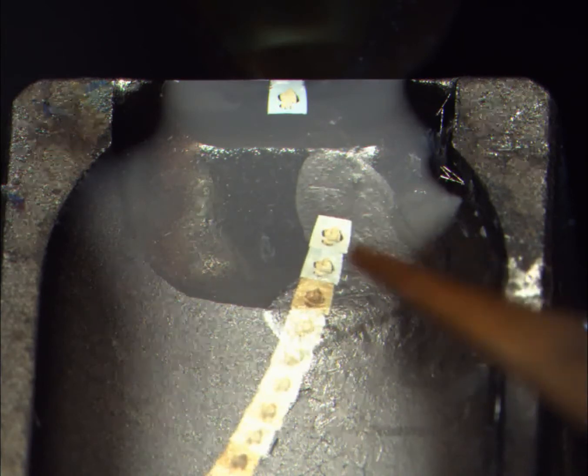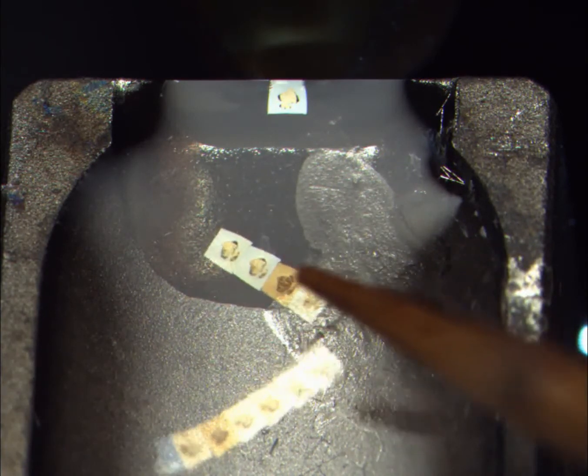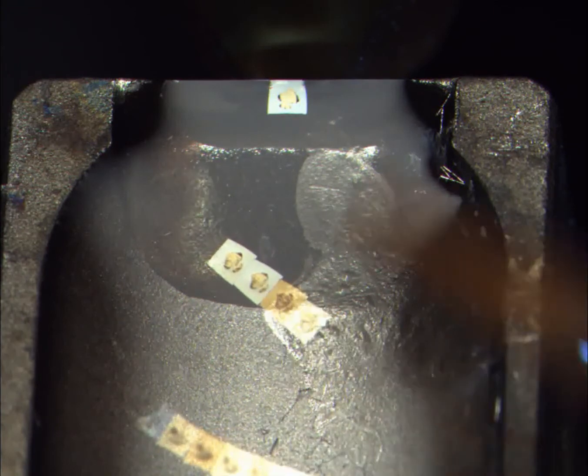To make sure the sections are flat, chloroform vapour is used to soften the resin. The water tension under the sample then stretches the sample out flat.